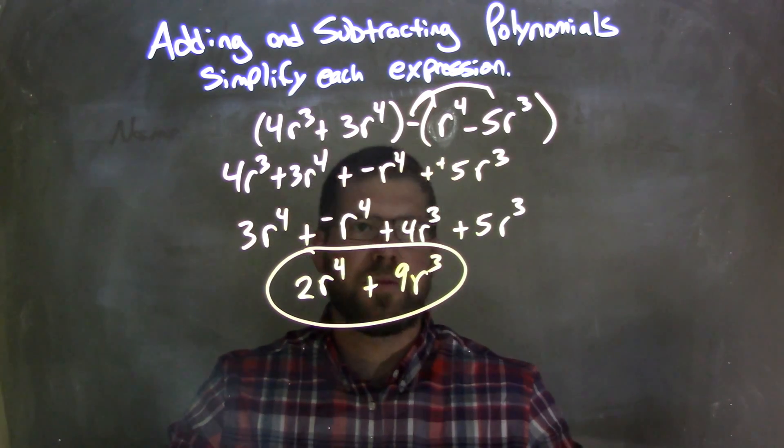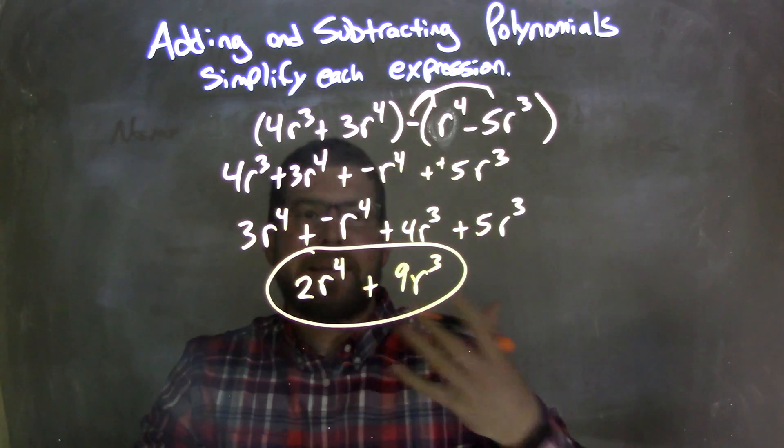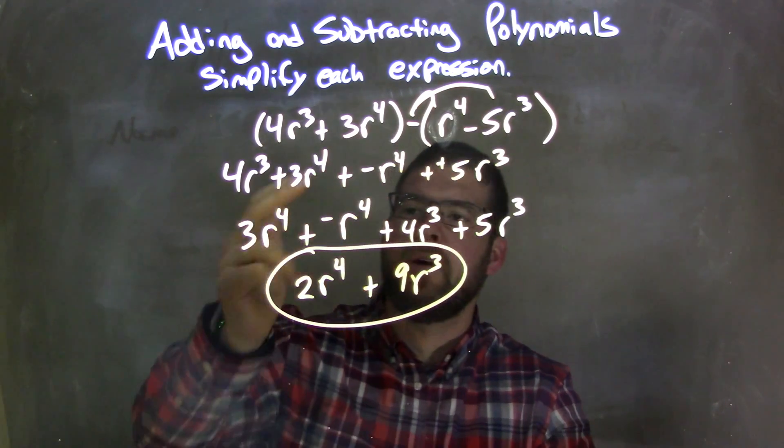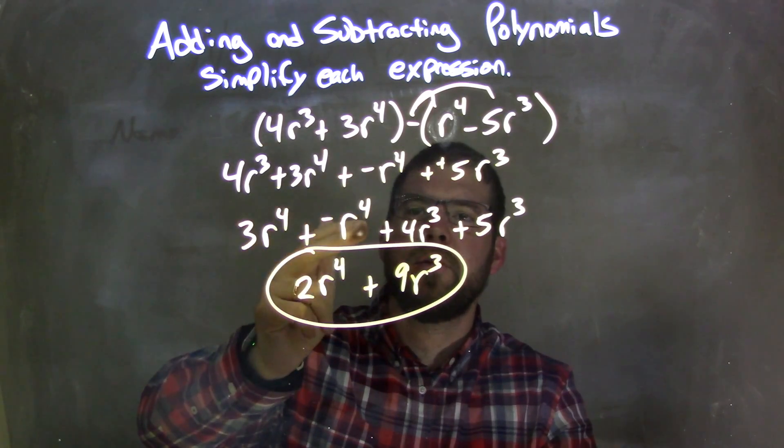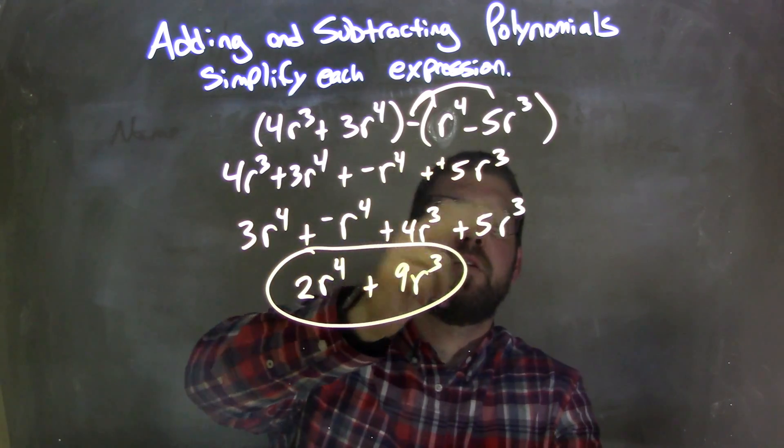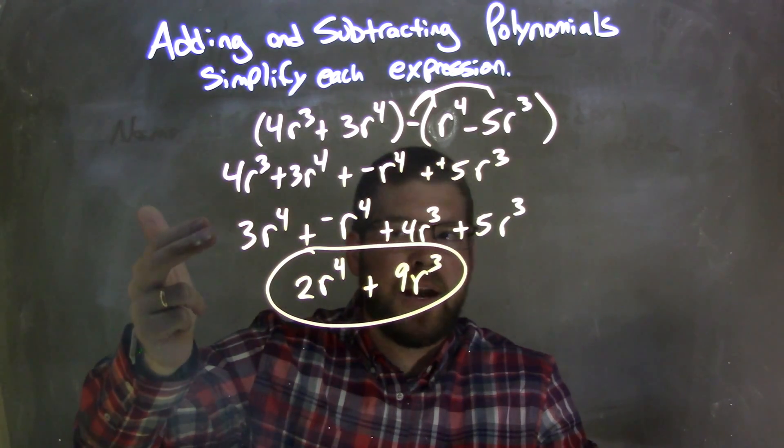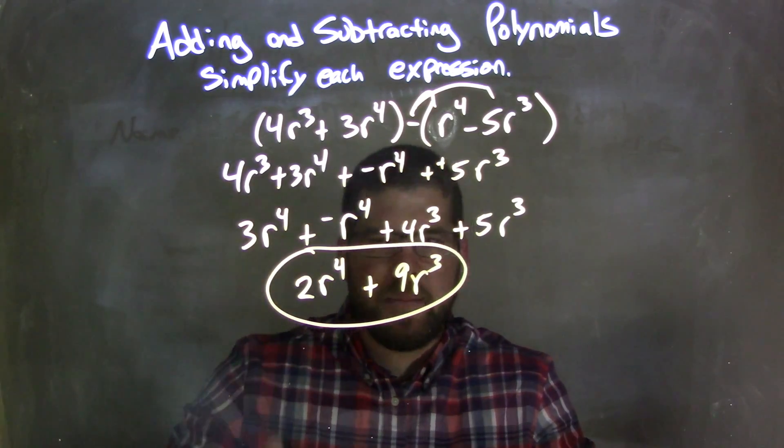It's less likely to make a mistake, or makes me at least less likely to make a mistake. I put my r⁴ first because it's my highest degree. So I have 3r⁴ here and then a negative r⁴. Then I have my 4r³ and then 5r³, my 3rd degrees. I double-checked to make sure I brought everything down, which I did. Now I combine my like terms.